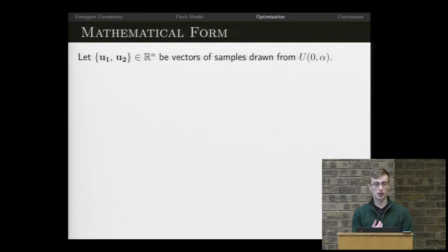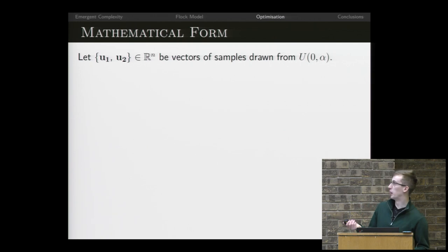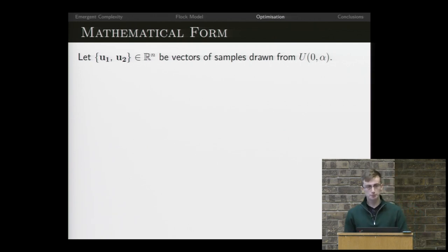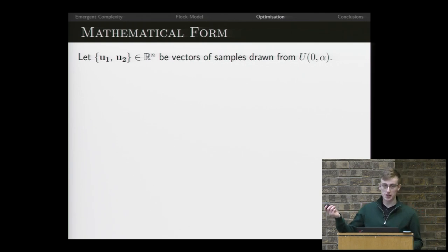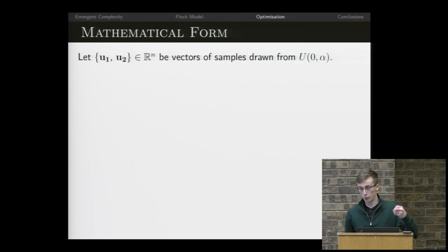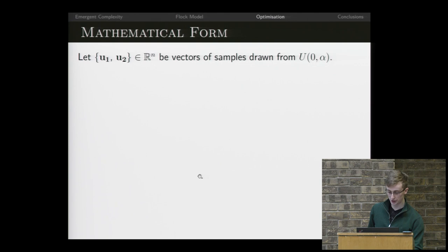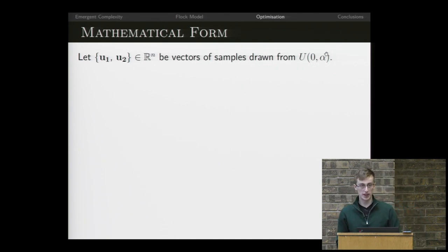The mathematical form describes our cohesion behavior — there's a little bit of magic here with random numbers that help us avoid pathological cases. We're going to have vectors of dimensionality n, where n is our search space, and we initialize them with uniformly distributed random components from zero to alpha, where alpha is just some parameter we pick.